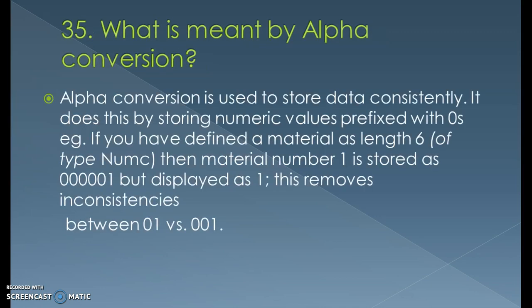What is meant by alpha conversion? Alpha conversion is used to store data consistently by storing numeric values prefixed with zeros. For example, if a material is defined as length 6 of type numeric, then material number 1 is stored as five zeros followed by 1 but displayed as 1. It's not just for adding or removing leading zeros — it can also be used for currency conversion, and for conversion of lowercase to uppercase letters and vice versa. Alpha conversion has predefined logic written behind it; we just need to use the required conversion and the backend code executes.